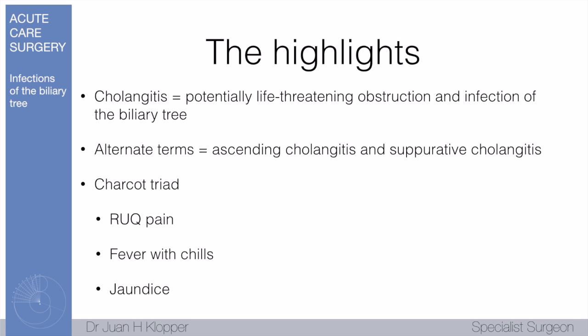What is cholangitis? It's a potentially life-threatening obstruction and infection of the biliary tree. There are lots of alternate terms — ascending cholangitis, suppurative cholangitis — but it's all about the infection and growth of organisms in an obstructed biliary tree. What do we look out for? Charcot's triad: right upper quadrant pain, fever with chills — referring to the bacteremia — and jaundice. Those three combined is called Charcot's triad.